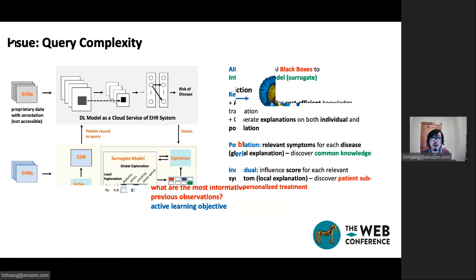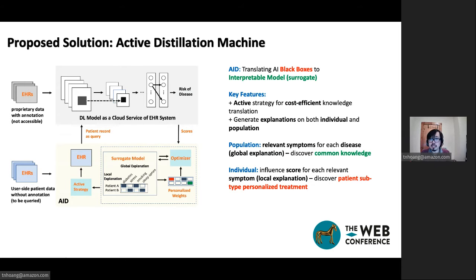So to address all of these challenges, we are proposing an active distillation machine. And the diagram of this machine is shown on the left. On the right, I summarize the key features of the distillation framework. Basically, at the top, the ultimate goal of this framework is to translate an arbitrary AI model into an interpretable surrogate representation.